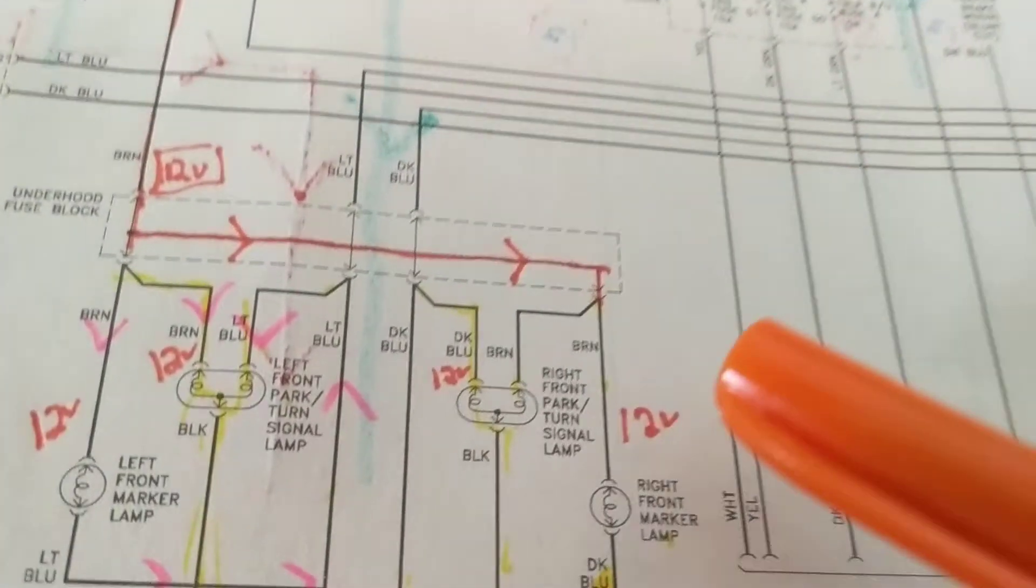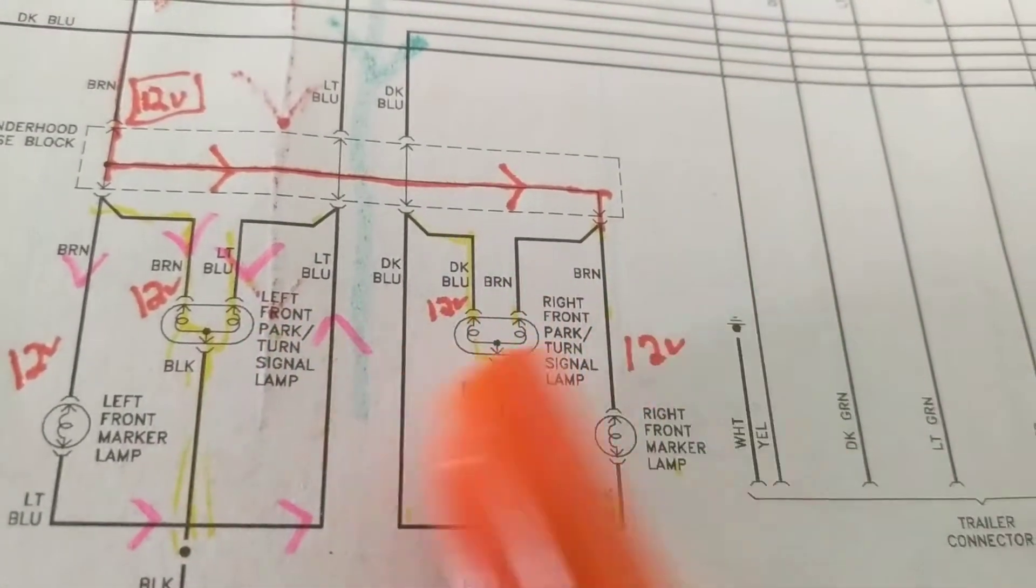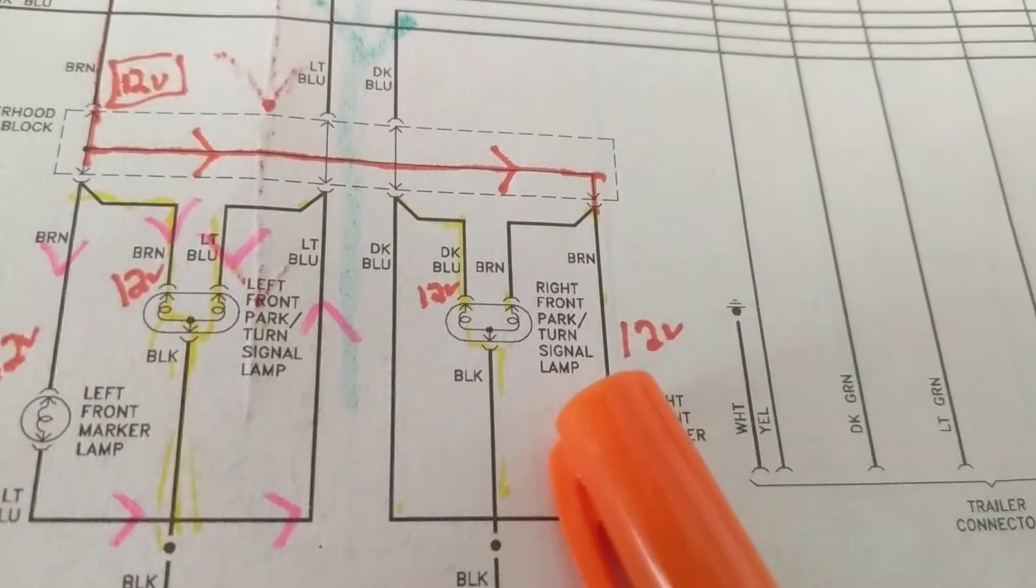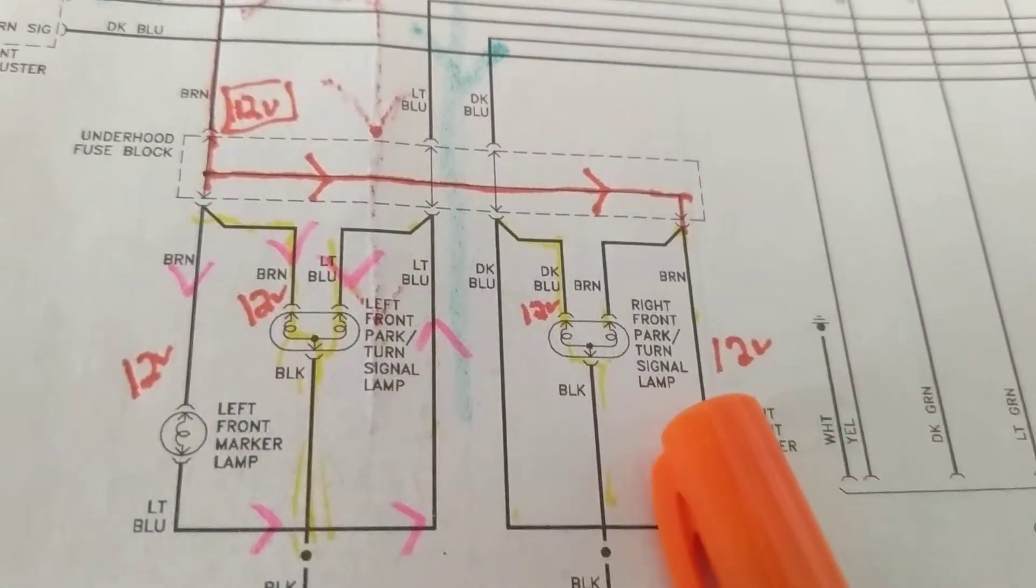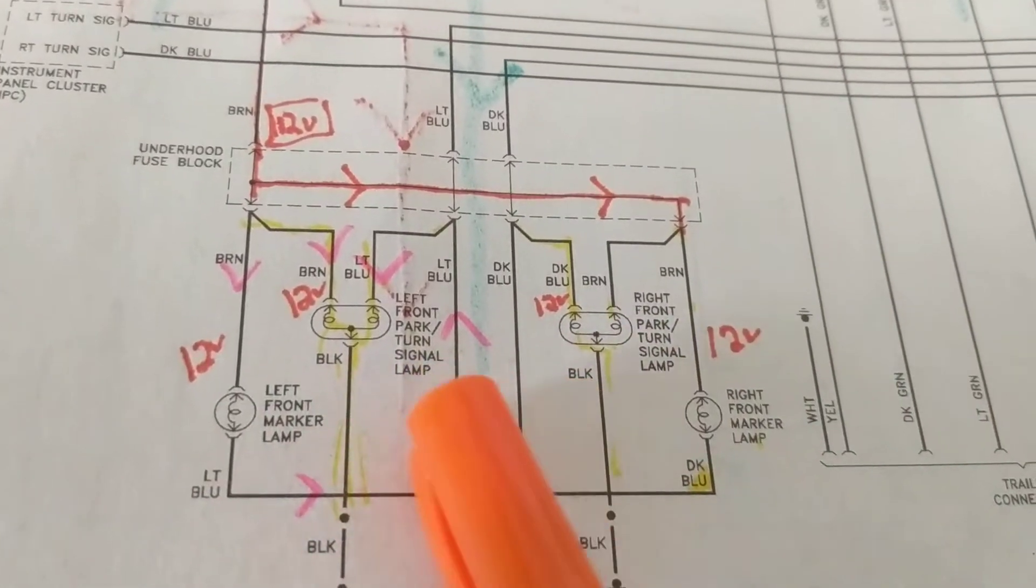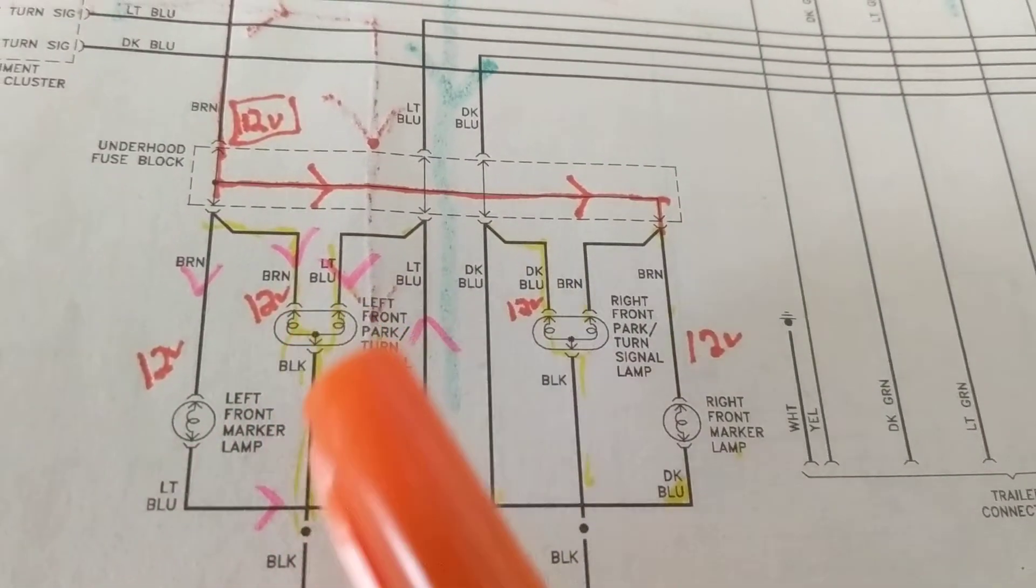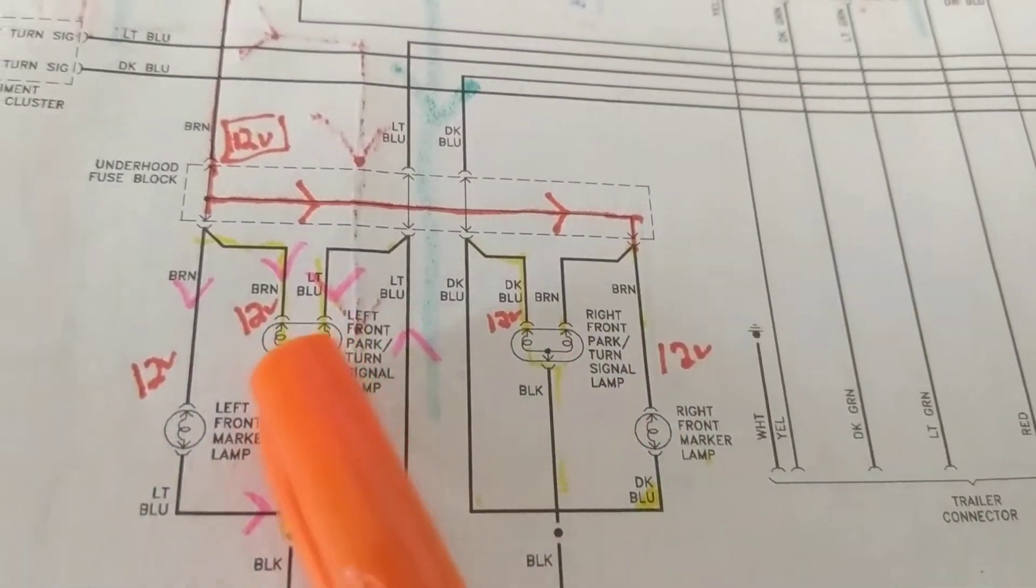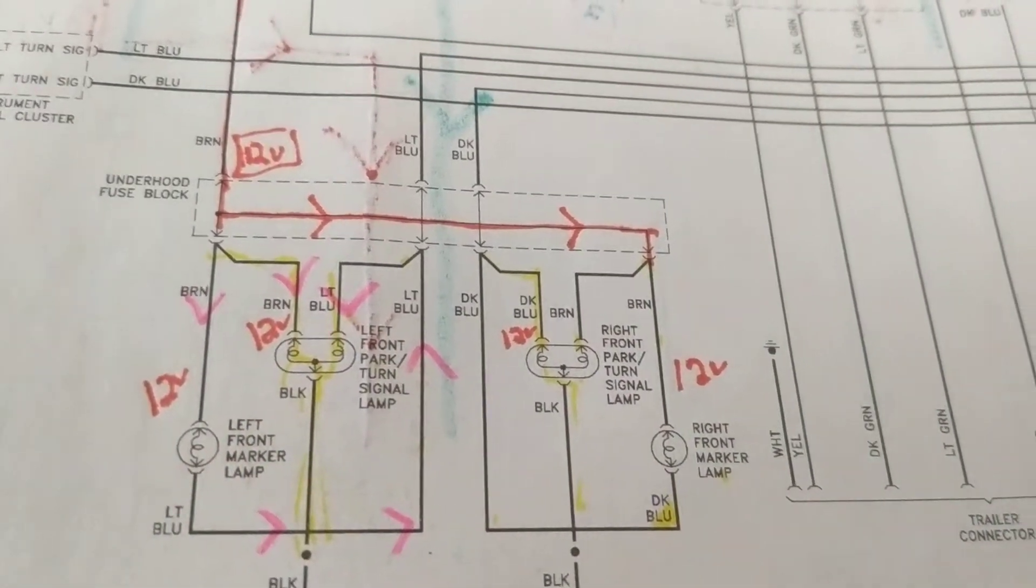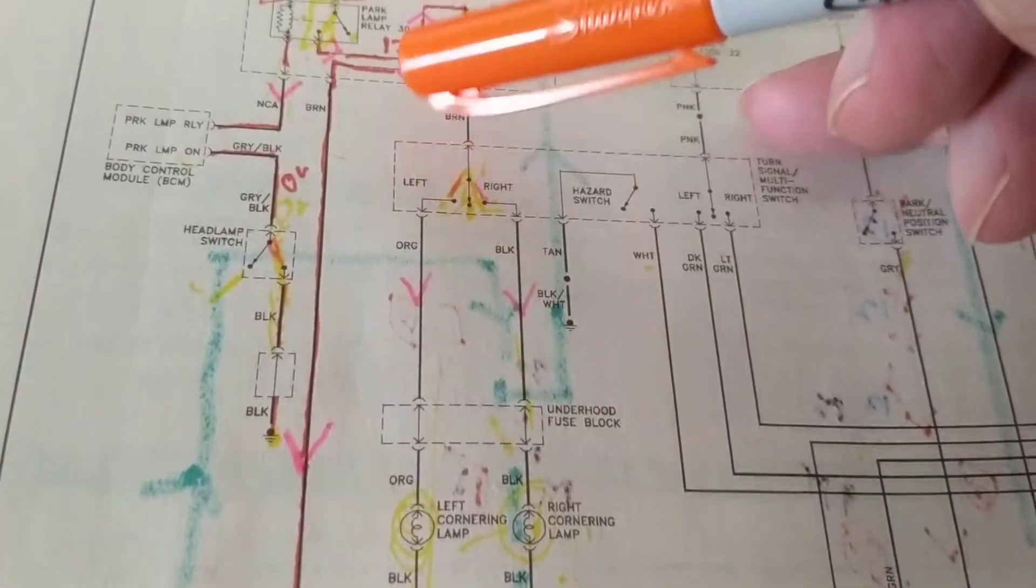Take for example this. You have left and right front parking lamps and also the turn signals for left and right. As you can see over here, these are the bulbs. One is for the left, one is for the right. As you can see, two filaments and one bulb. Now, we come back over here.